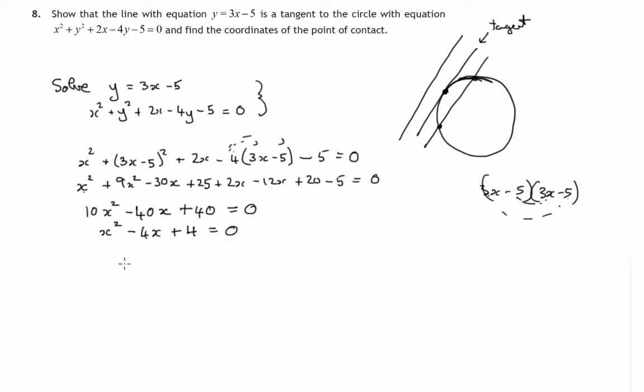Now this should factorize hopefully. x times x gives us x squared. Last two terms: 2 times 2 gives us 4.